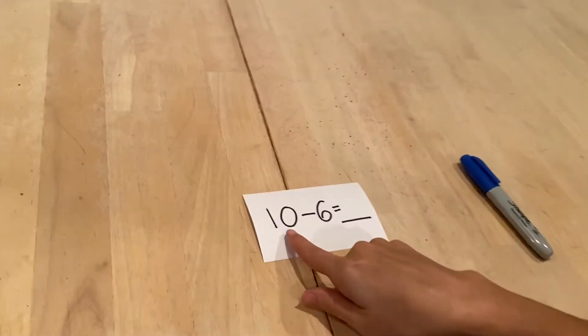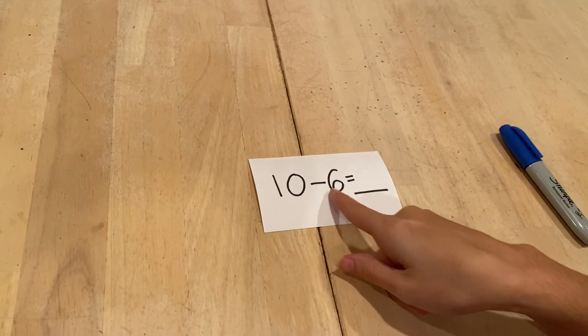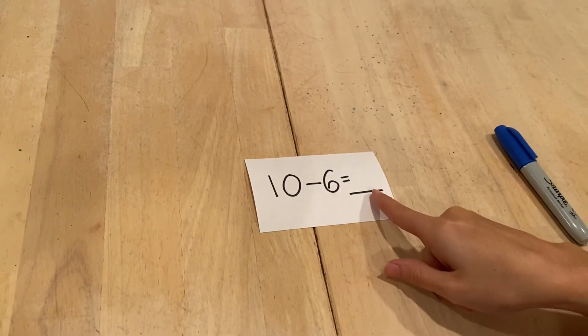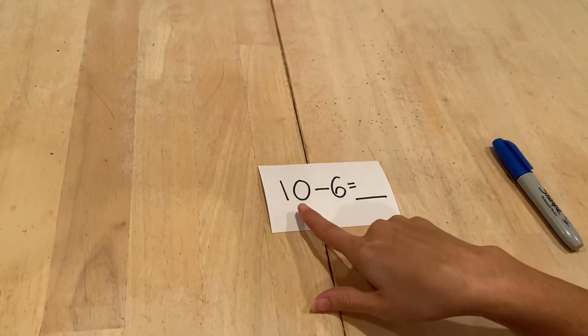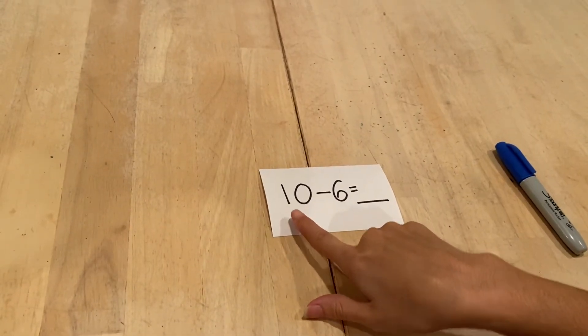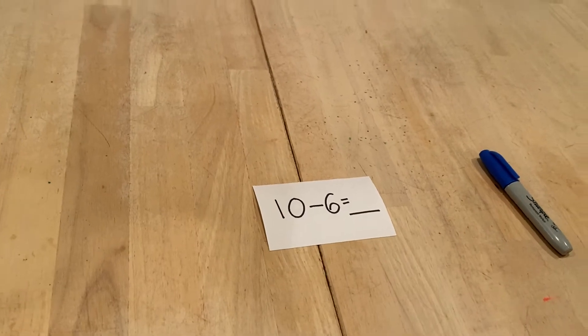Let's take a look at our number sentence: 10 minus 6 equals blank. The number is 10, so I can use my fingers to solve this.